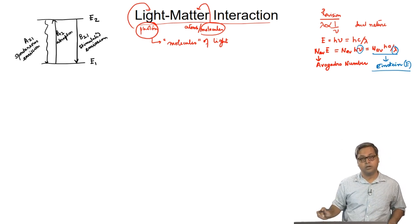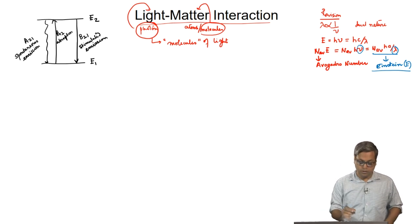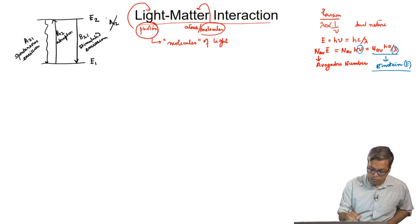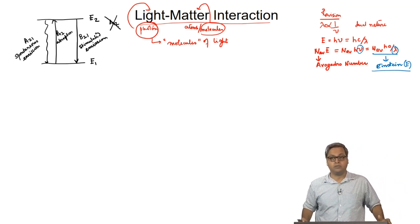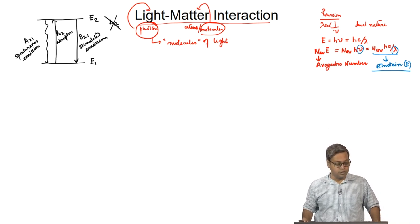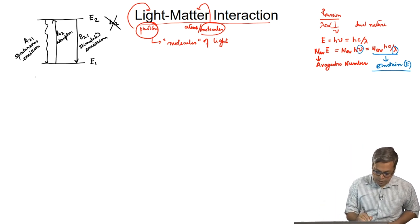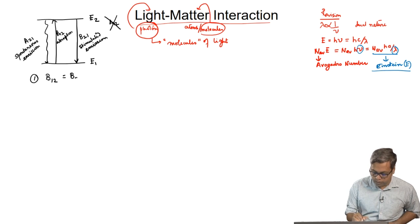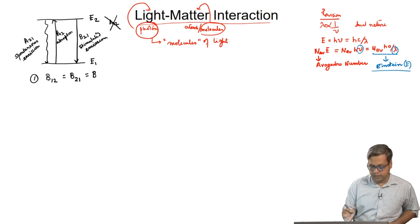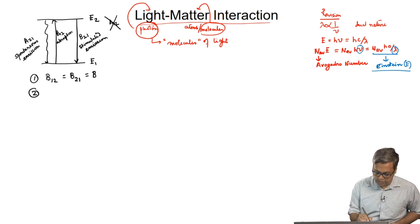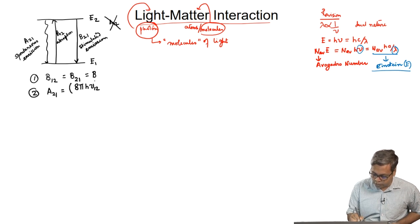We should remember that there cannot be a process with coefficient A12. This is because when the molecules are already at the ground state, we need some stimulation by light to take the molecules to the excited state. In other words, molecules in the ground state cannot reach the excited state spontaneously. In the last class, we saw these three coefficients are related and we found two relations. The first relation is B12 equals B21, which we can write simply as B, Einstein's B coefficient.